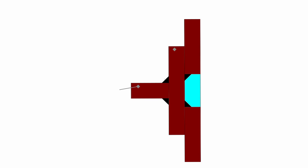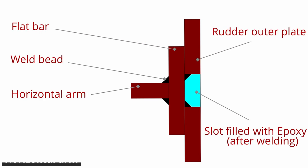In this section view representation, you can see how the flat bar is welded to the arms and how the slot welding is done. Slot welding to the vertical webs is carried out in a similar way. After the welding, the slots are filled with epoxy and painted over.